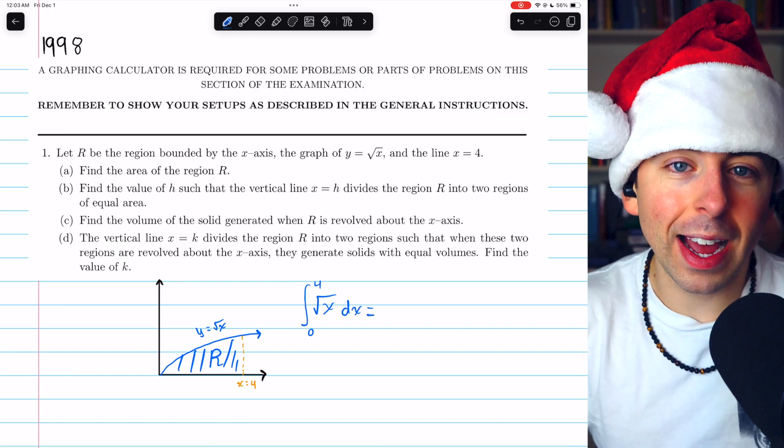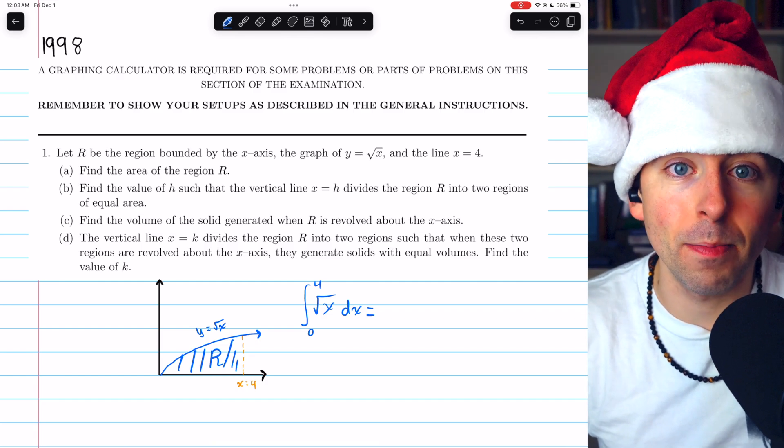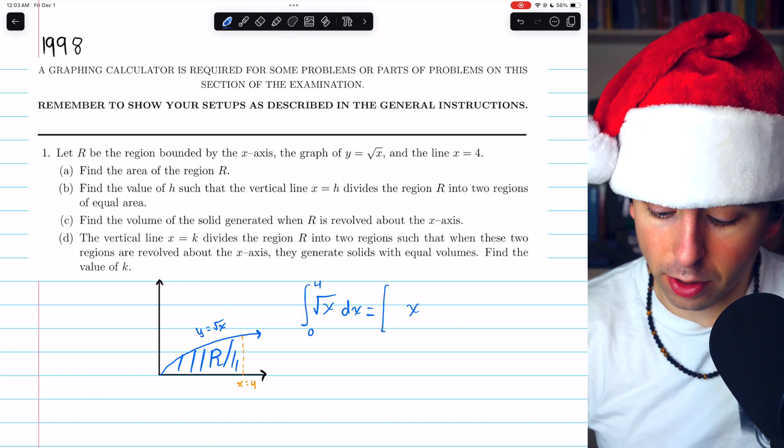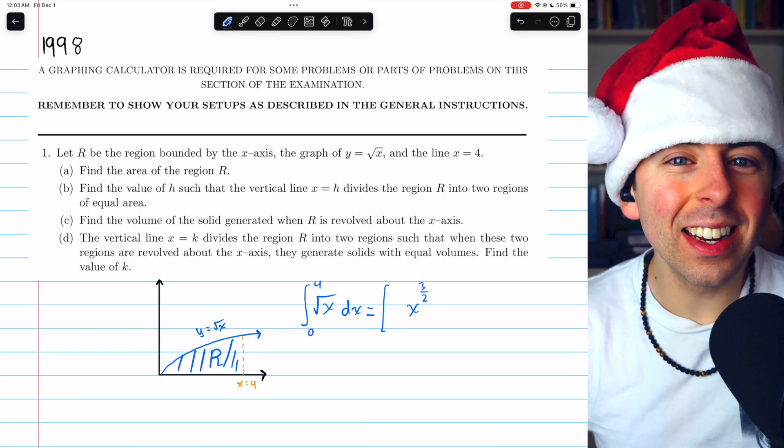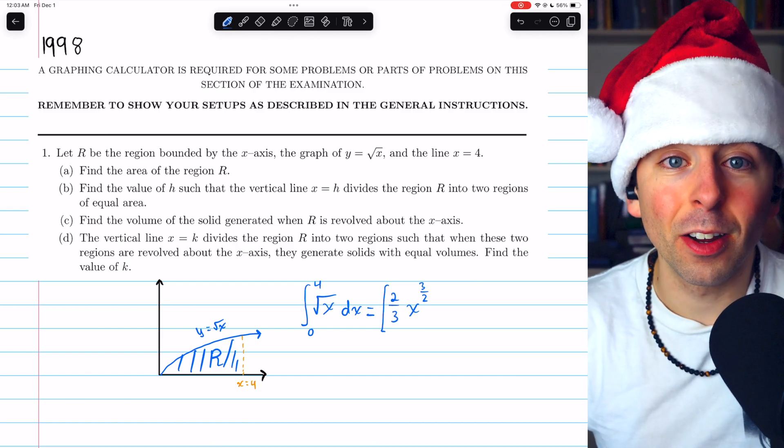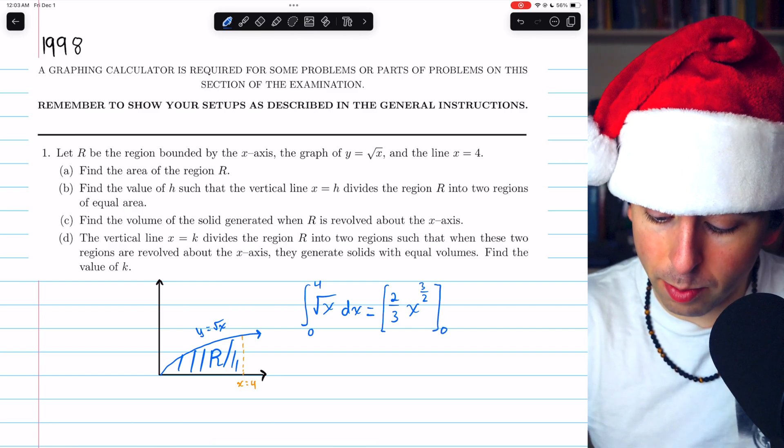Now, square root of x is the same as x to the 1 half. So to integrate this, we're just using the power rule. We need to increase the power by 1. So x to the 1 half goes up to x to the 3 halves. And then divide by that new power, which is the same as multiplying by its reciprocal.